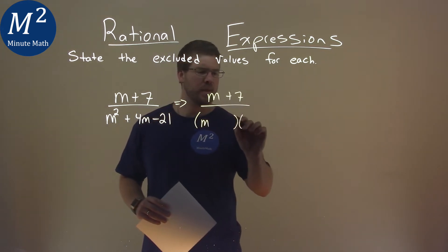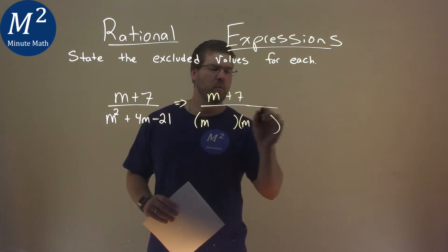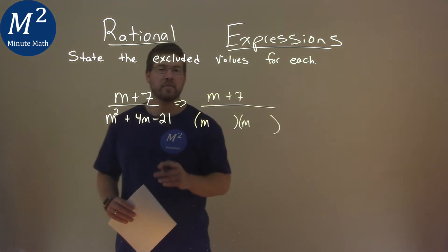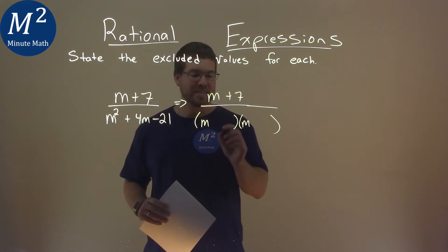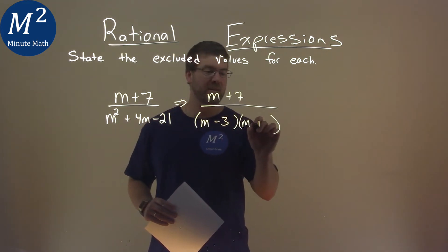We have m and m. And so what two numbers multiply to be a negative 21, but add to be a positive 4? And that's going to be a negative 3 and a positive 7.